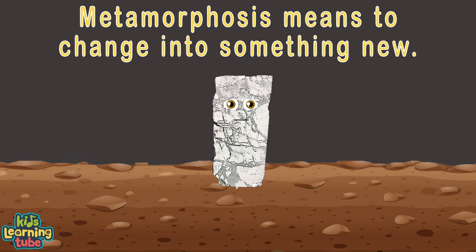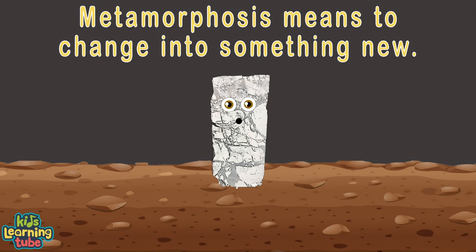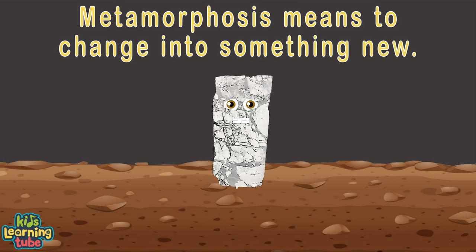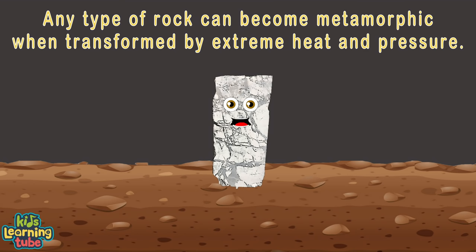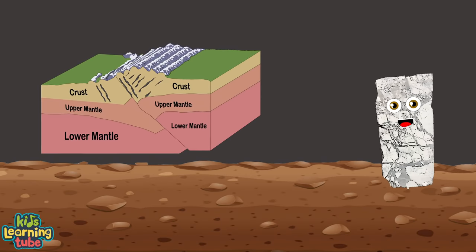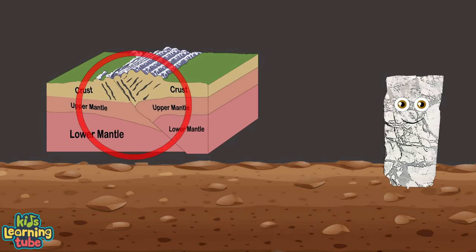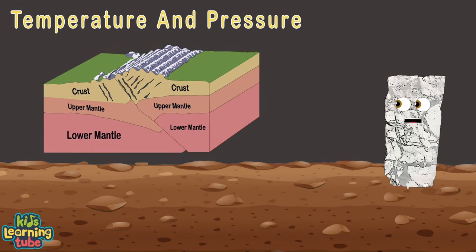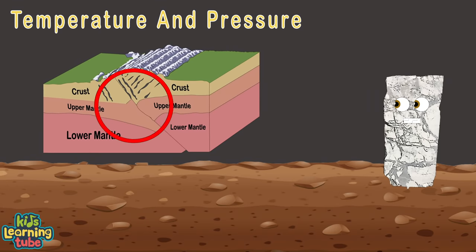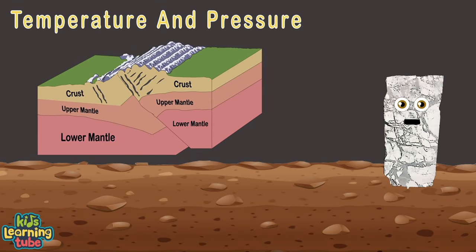Metamorphosis means to change, and I'm transformed by heat and pressure from existing rocks. Any type of rock can become metamorphic when transformed by extreme heat and pressure. Metamorphic rocks form deep within the Earth's crust, where temperatures and pressures are high.